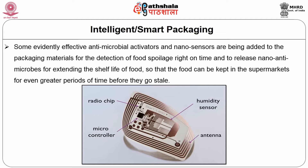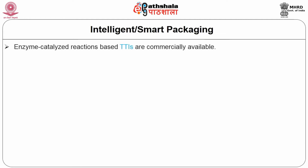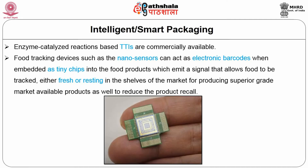So that the food can be kept in the supermarkets for even greater periods of time before they go stale. Food tracking devices such as nano sensors, which are invisible to the human eye, can act as electronic barcodes when embedded as tiny chips into food products, emitting a signal that allows food to be tracked — whether fresh or resting on the shelves of the market — in order to produce superior grade products and reduce product recall.